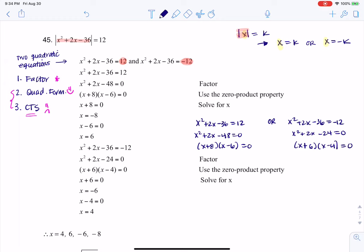And so you see that I'm getting a whole bunch of answers. I'm going to use the zero product property. Set each of my factors to 0. So I have x plus 8 equals 0, x minus 6 equals 0, x plus 6 equals 0, and x minus 4 equals 0. And that's where I'm coming up with these four numbers.